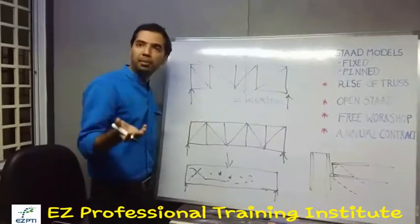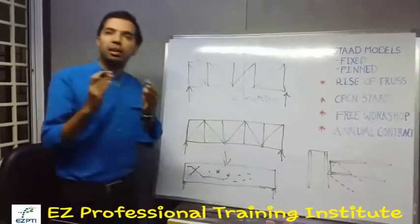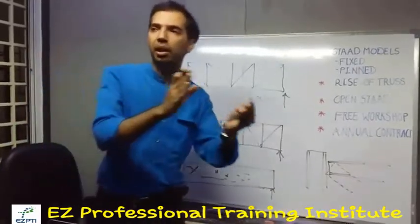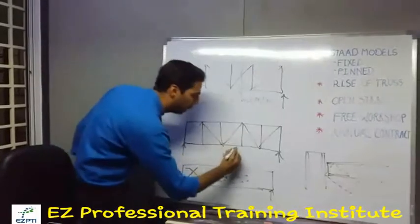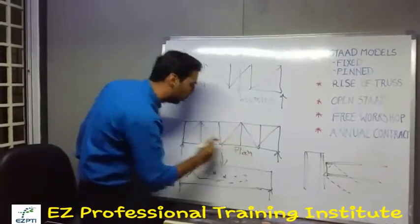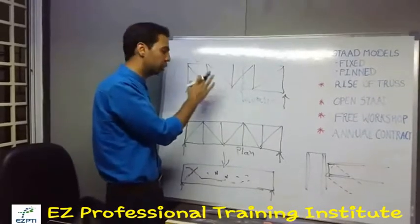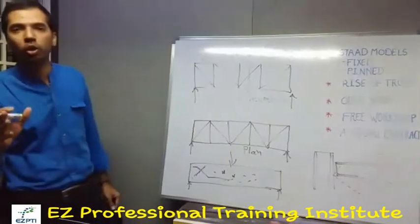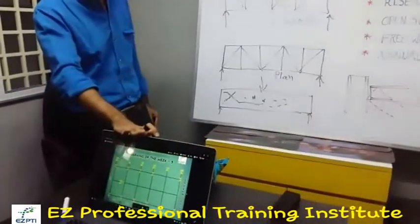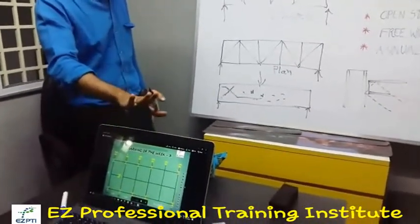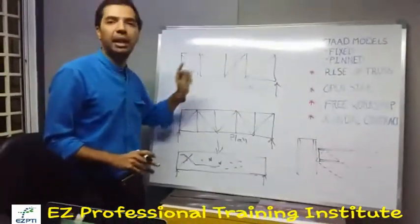If you are going to provide plan bracing for seismic loads, they are reversed — it can come from one direction or from the opposite direction. So for plan bracing we prefer this type of configuration. One thing is clear: when you are going to provide bracing in our pipe rack and it is for gravity loads, which is mainly governing, then the bracing will be like this.